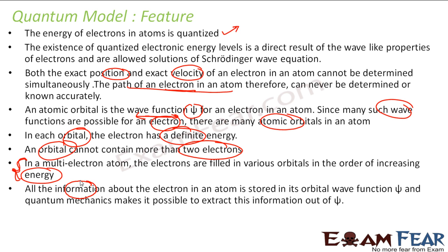All information about the electron in an atom is stored in the wave function. This is the most critical thing, wave function. And the quantum mechanics make it possible to extract this information from this function. This wave function stores everything about the electron.